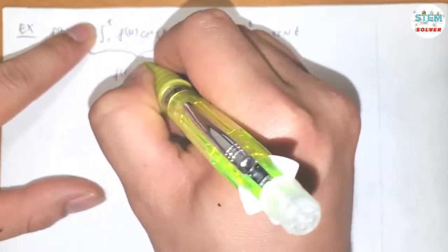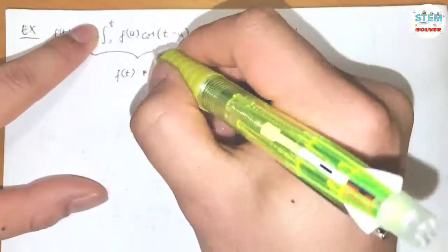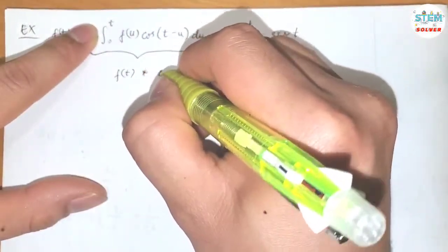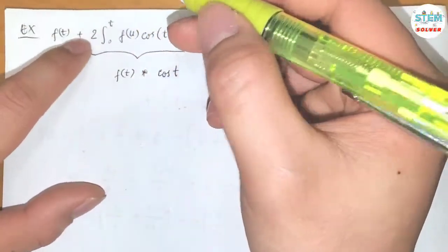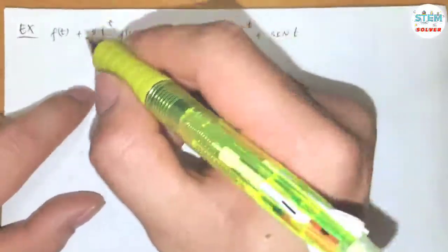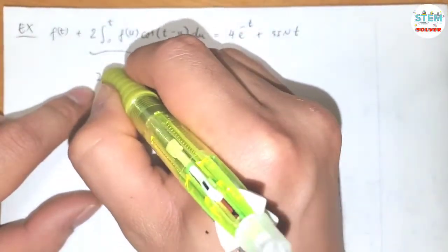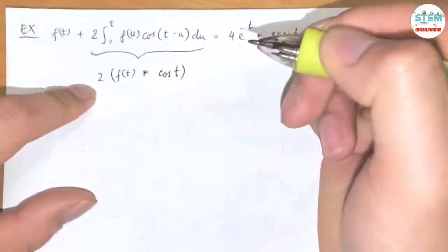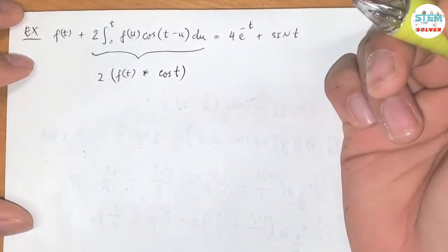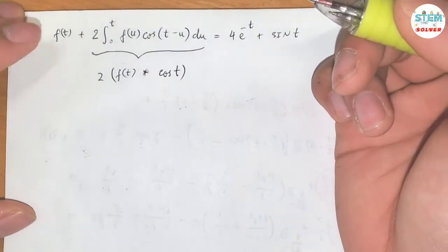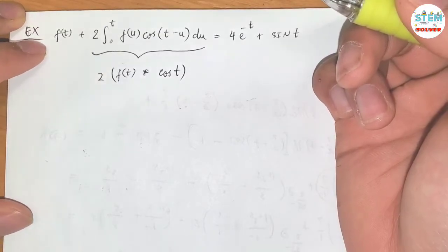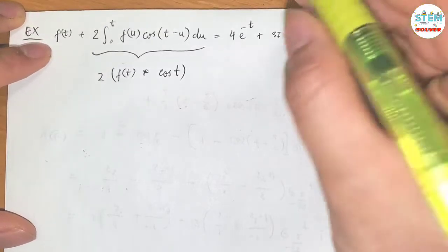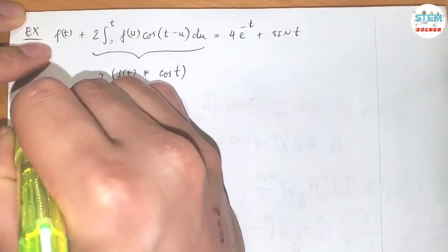This can be written as f of t convolved with cosine t. The dual here changes to two times this. Now I'm going to apply the Laplace transform on both sides.